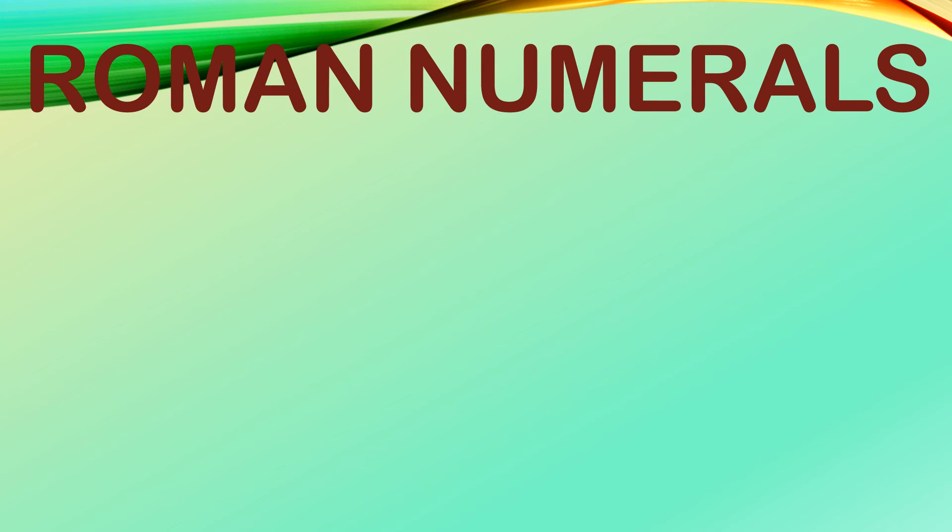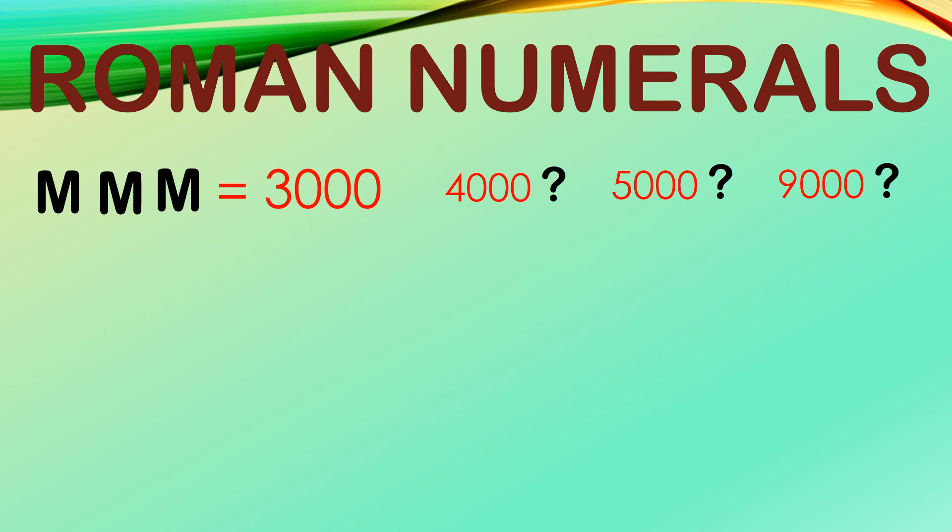One last important thing. You probably noticed that among the seven letters, letter M has the highest value of 1,000. And if a letter can only be used three times in succession like this, M, M, M, the highest value that we can have is only 3,000. But how would you express 4,000, 5,000, 9,000, or other multiples of thousands? This is where you need a bar.